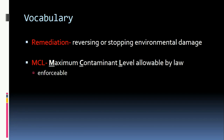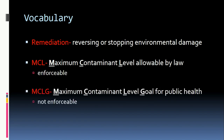MCL stands for maximum containment level. This is an enforceable amount that a property owner, such as a company or farmer, can emit into a body of water. MCLG stands for maximum containment level goal. This is a non-enforceable amount of a given pollutant that land managers aim to be under in a body of water. If the pollutant level is above the MCLG, no one is prosecuted, but land managers will work with property owners to reduce the pollutant load.